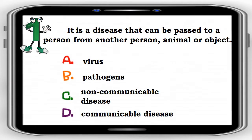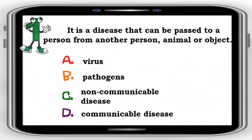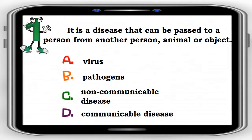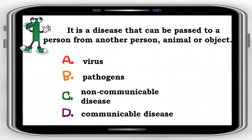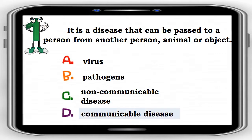Number 1. It is a disease that can be passed to a person from another person, animal, or object. A. Virus, B. Pathogens, C. Non-communicable disease, D. Communicable disease. The correct answer is D. Communicable disease.